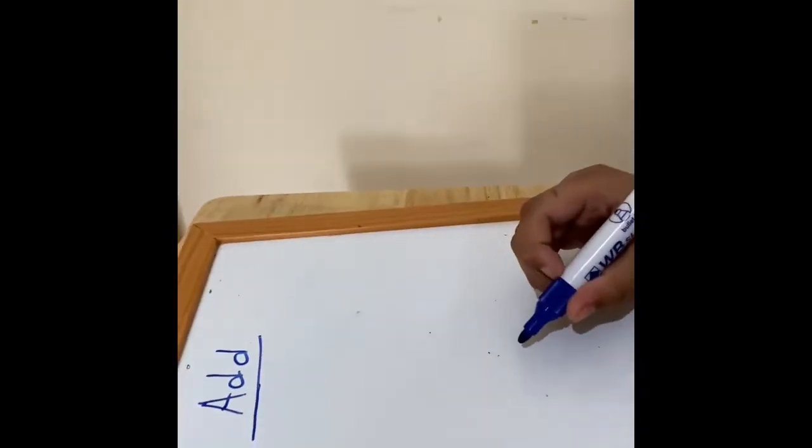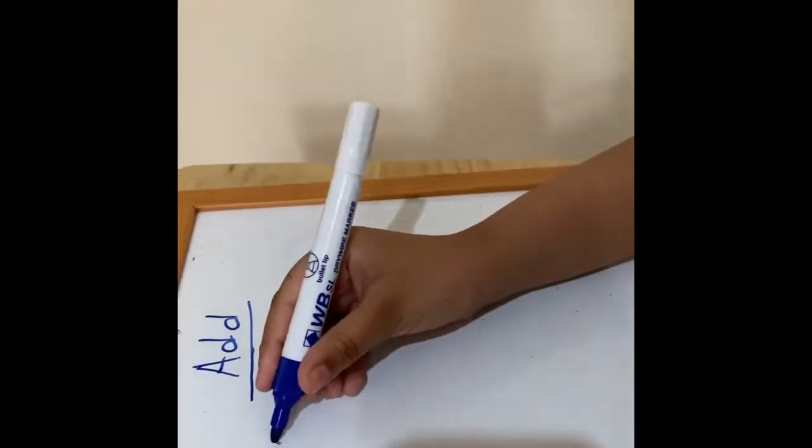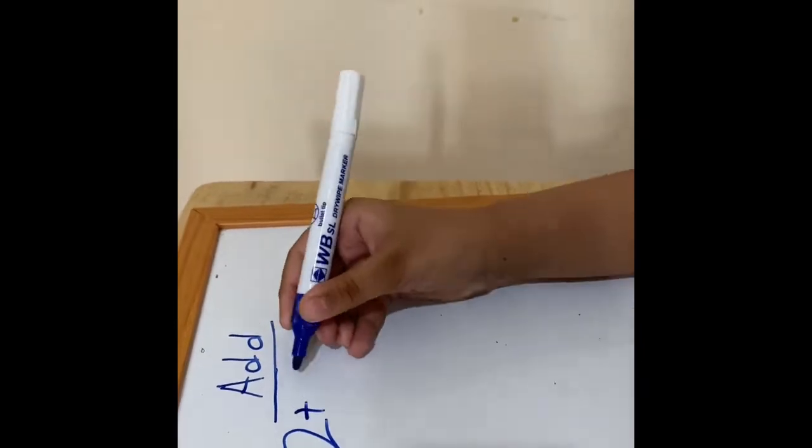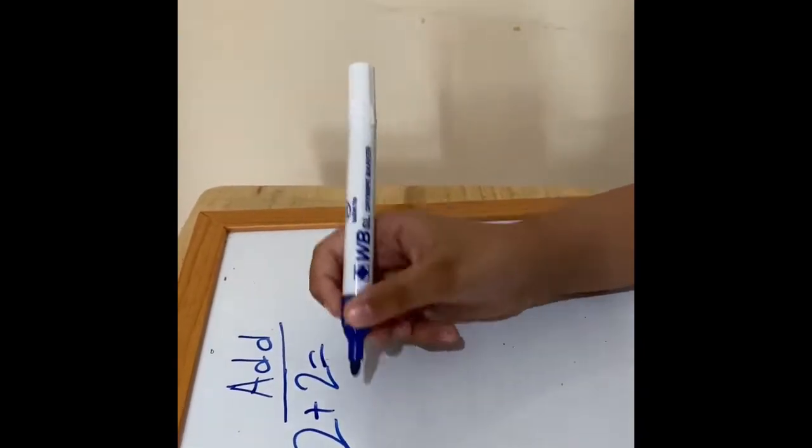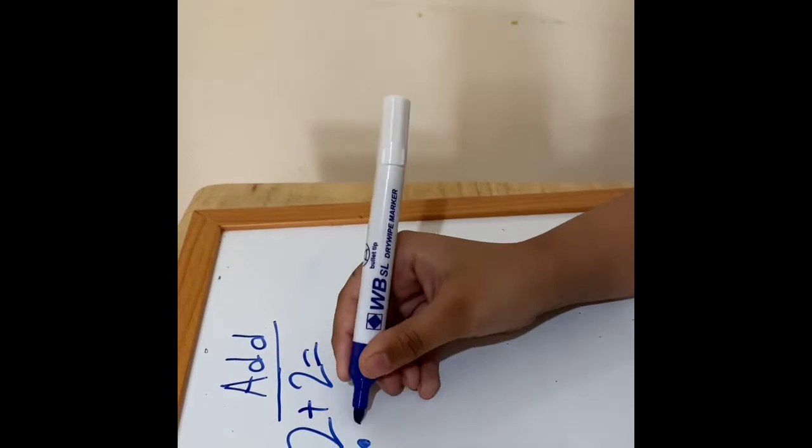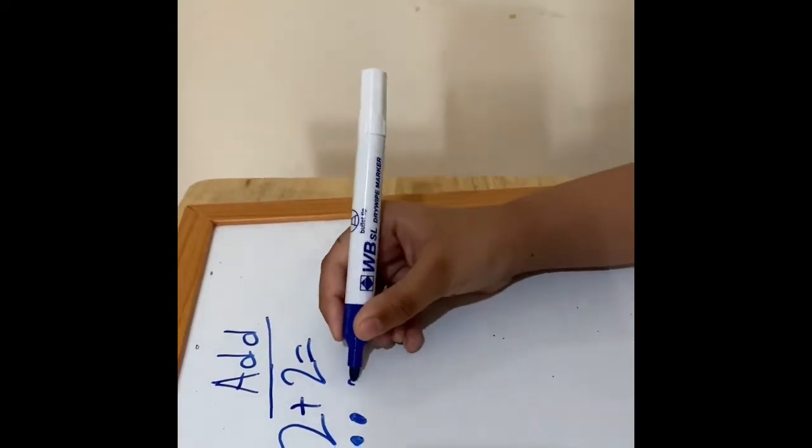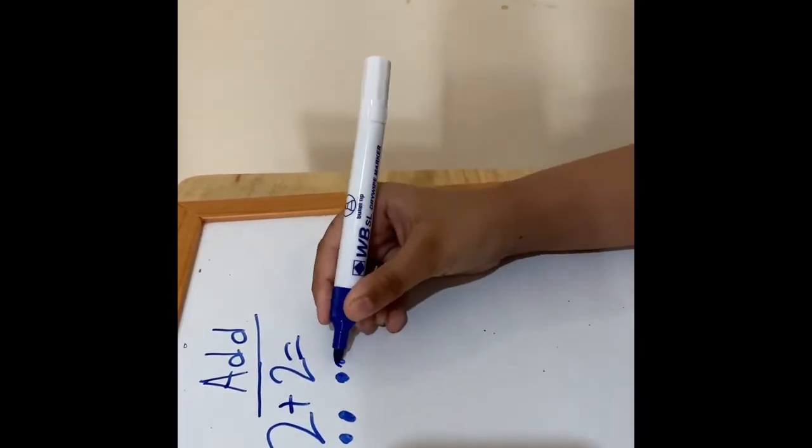We're going to do a very easy one, and this is 2 plus 2. Do two dots for the two, for the first two, and do the same for the other two.